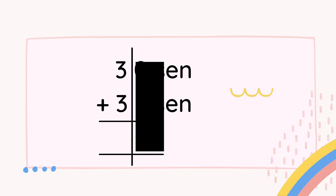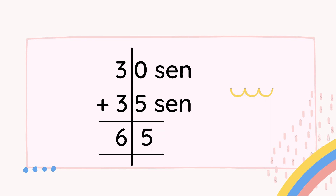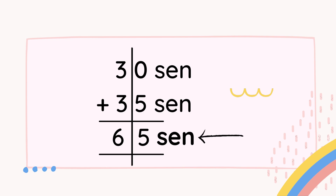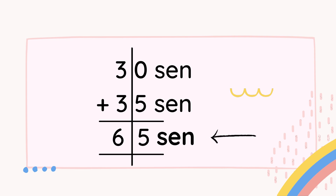Then we move to place value 10s. For place value 10s, we have the number 3 on the top and another number 3 at the bottom. We do count on also. Put the first number 3 at your mouth, the second number 3 at your fingers, and count on: 3, 4, 5, 6. Write 6 in the answer section. Since this is addition of money, don't forget to write 'sen' because we are doing addition for coins. Write 'sen' in the answer section — this is very important.